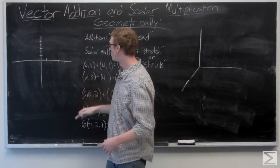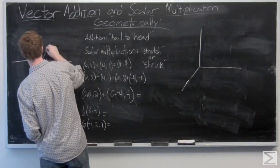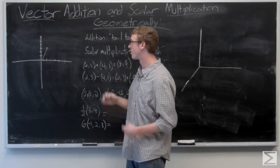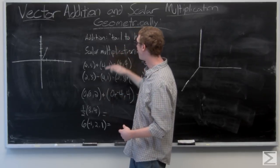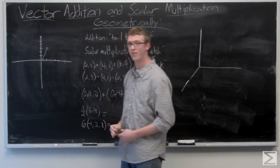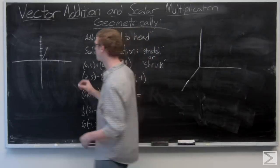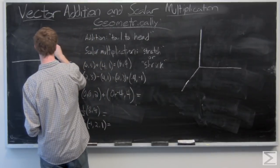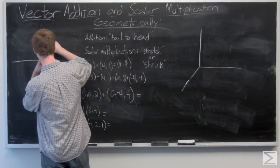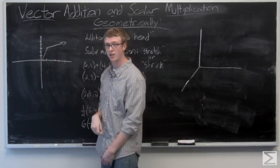We have a vector (2, 3) - 2 to the right, 3 up. Now we're adding the vector (4, 1). We're going to add the tail of the vector (4, 1) to the head of the vector (2, 3) to get the result (6, 4).